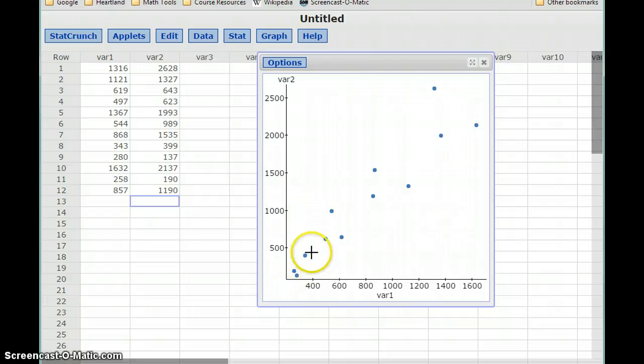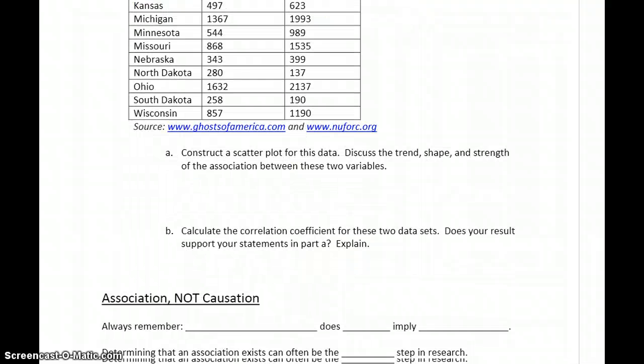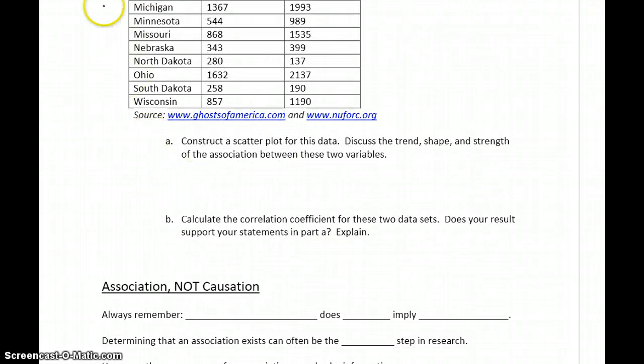So we have a fairly moderately strong linear association. We have points that are following, in general, that straight line pattern. It's a positive association. So we could say in this case, there is a fairly strong positive linear association.